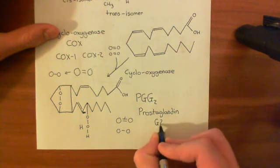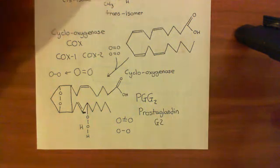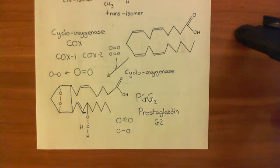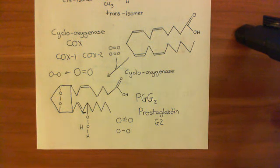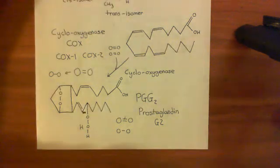In the next video, we'll look at the next reaction that the cyclooxygenase enzyme catalyzes, where it turns prostaglandin G2 into prostaglandin H2 — this is the so-called peroxidase reaction.